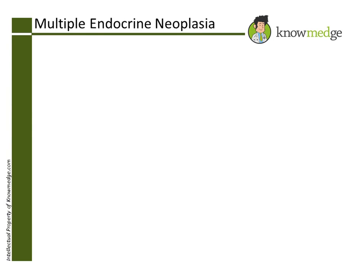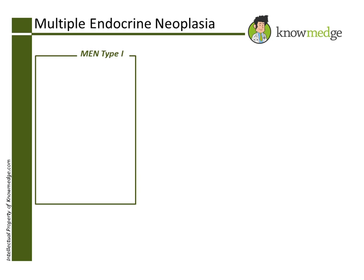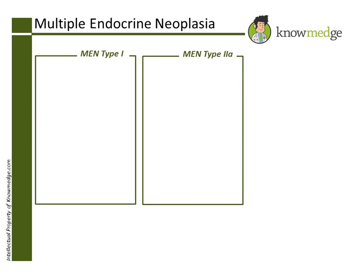Multiple endocrine neoplasia, MEN, encompasses several distinct syndromes that feature tumors of the endocrine glands. The three subtypes are MEN type I, MEN type IIa, and MEN type IIb.